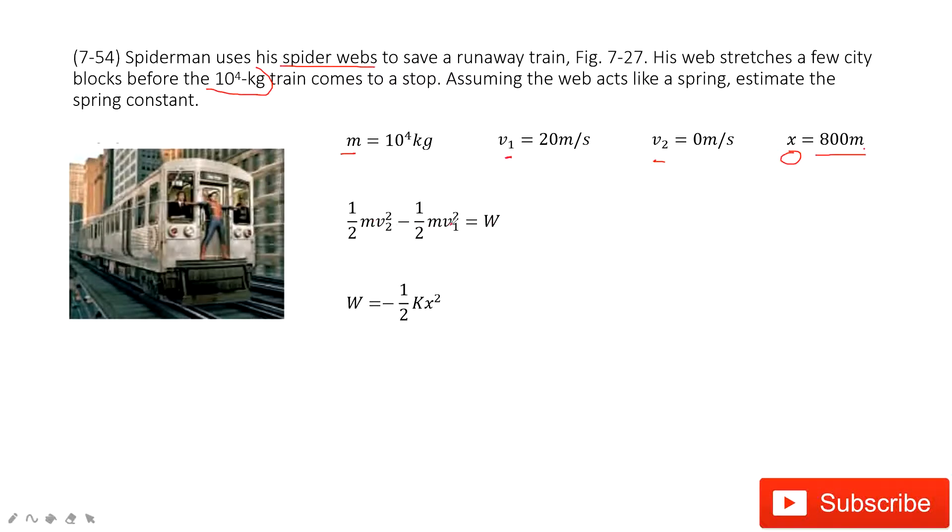The initial and final kinetic energy are given, so we can find the work needed. This work comes from the spiderweb. This is the elastic energy. So this is one half k x squared.